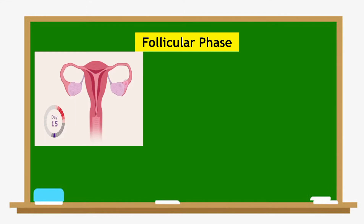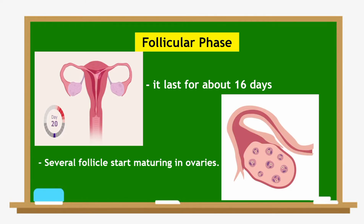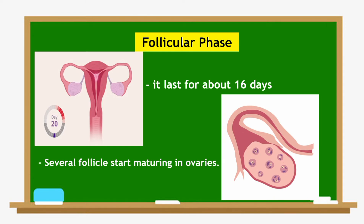Next, we have the follicular phase, which lasts for about 16 days. After menstruation, the endometrium begins to build up. Several follicles start maturing in the ovaries, but only the healthiest follicle will eventually mature. The rest of the follicles will be reabsorbed into the female's body.